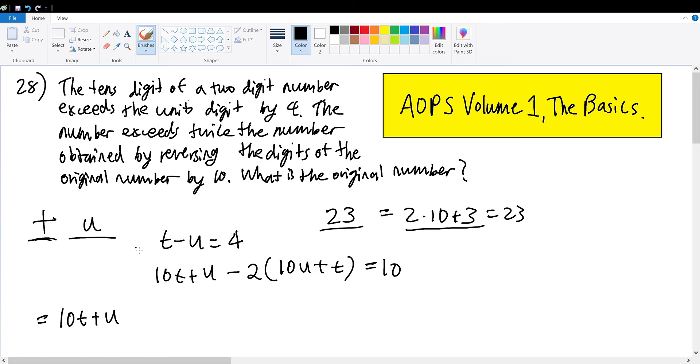Here we set up a system of equations to solve both digits. Our first one remains the same: t minus u equals 4. If we expand the second equation, we get 10t plus u minus 20u minus 2t equals 10. Simplifying, we get 8t minus 19u equals 10.